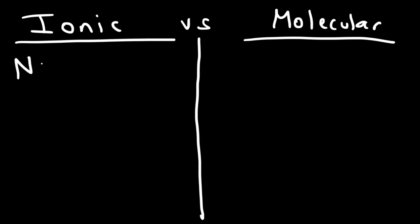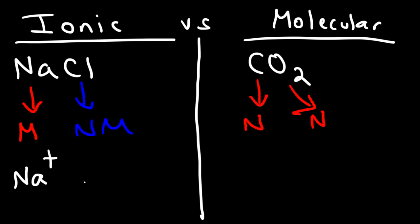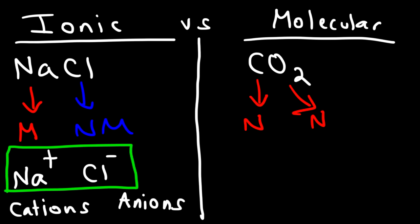Sodium chloride is an ionic compound; carbon dioxide is a molecular compound. Sodium is a metal and chlorine is a non-metal, while carbon and oxygen are both non-metals. Ionic compounds are typically composed of metals and non-metals; molecular compounds are typically made up of non-metals bonded to each other. Both are compounds because they consist of two or more different types of atoms. Metals tend to form positively charged cations; non-metals tend to form negatively charged anions. Ionic compounds consist of ions.